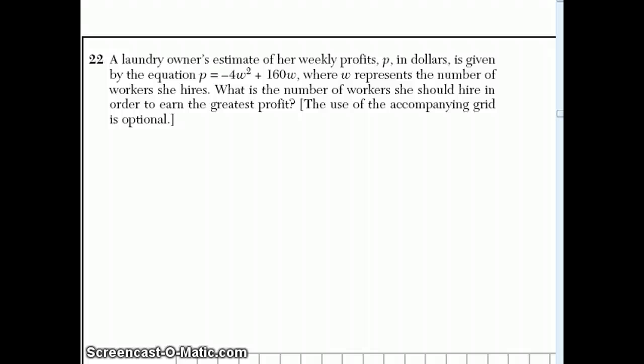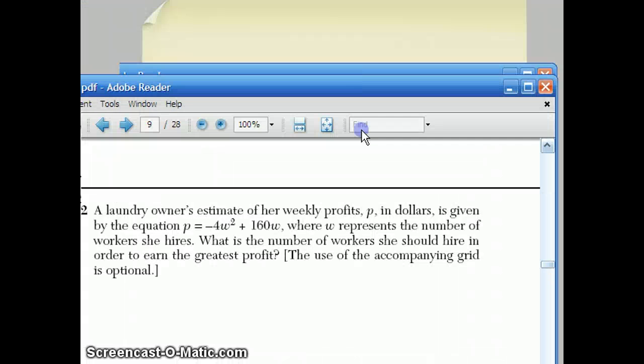Hi, this is Mr. Rubensy, and this is part four of my series of tutorials about Math B Regents from June 2008. We're up to question number 22 on part two, which says, a laundry owner's estimate for weekly profits is given by the equation P equals minus 4W squared plus 160W. What's the greatest number of workers you should hire in order to earn the greatest profit?